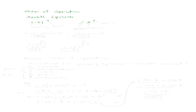Before expanding them, let's identify what our base is and what our exponent is. Here, the base is negative 2 and the exponent is 4. That means we're going to take negative 2 times itself 4 times. When we do that, we get positive 16.